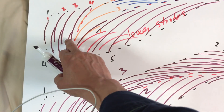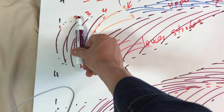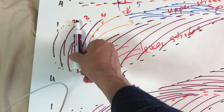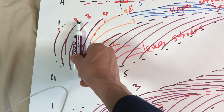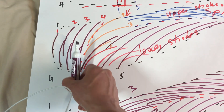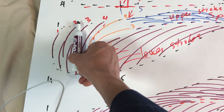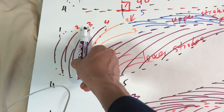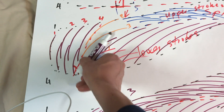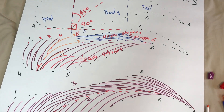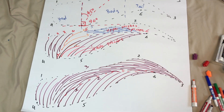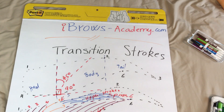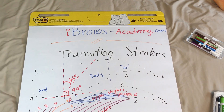If your head stroke number four is just standing straight up like this, you're in trouble when you do the transition stroke. If the last head stroke is standing up straight and you do the transition stroke, you will have a broken area. The last head stroke has to be going this way. If it's standing up too much, add more head strokes to give you some angle, then do the transition stroke and it would look more beautiful. Thank you so much! My name is David Nguyen from eyebrowsacademy.com. Thank you and goodbye!